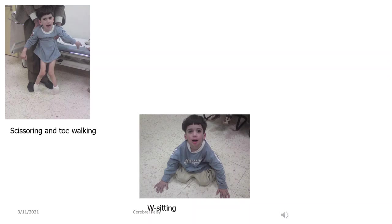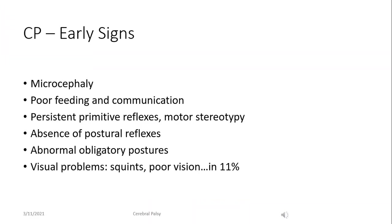This child has the diplegic form of CP where the lower limbs are involved much more than the upper limbs. The early signs predicting the future development of CP in the first year of life include microcephaly, poor feeding and communication, persistence of primitive reflexes, absence of postural and protective reflexes such as the parachute reflex, abnormal obligatory postures such as W sitting, and visual problems such as squint.